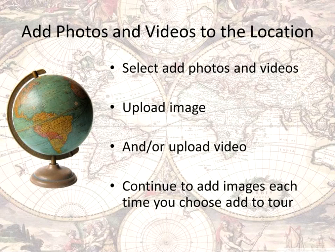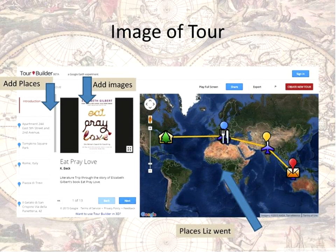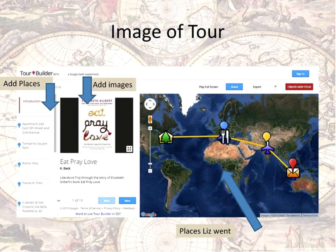What you do in the process is upload that photo and/or video, and continue to add images each time you choose a location. I was working with a group of teachers and most of them had read Eat, Pray, Love, so I thought that would be a great example for them to practice. Elizabeth Gilbert travels around the world in her journey to find herself — to eat, and to pray, and to love. I uploaded a photo of the book and gave a little description about it.